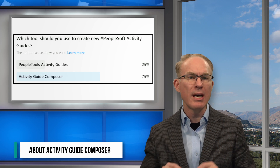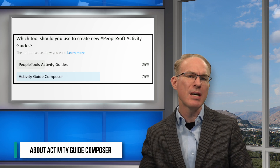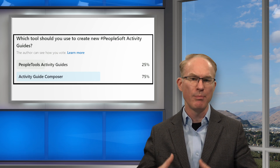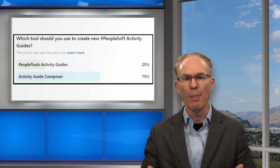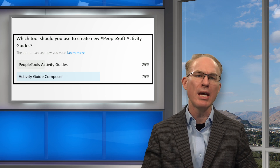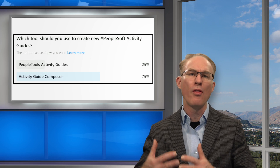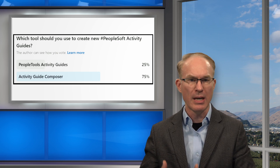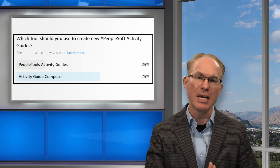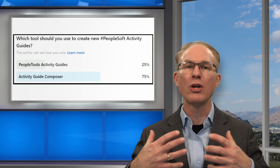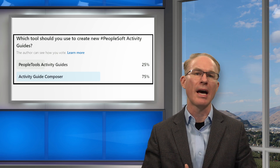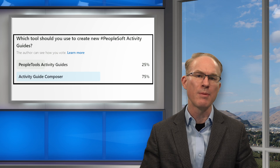When activity guides first appeared, app teams such as the HCM team built them using the People Tools activity guide tool. As you can imagine, customers wanted to change the activities associated with those activity guides. The problem was the changes represented customizations, so the question was: how can customers alter activity guides to fit their business processes without creating an upgrade headache?